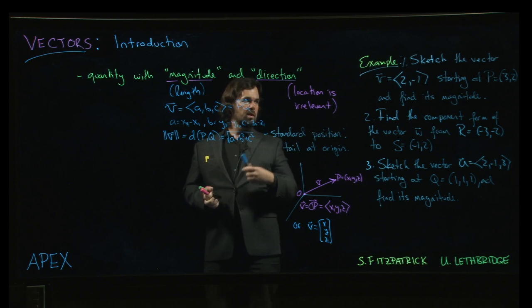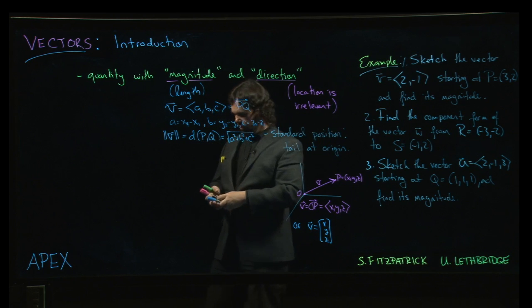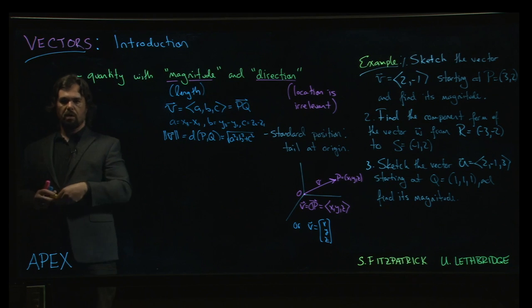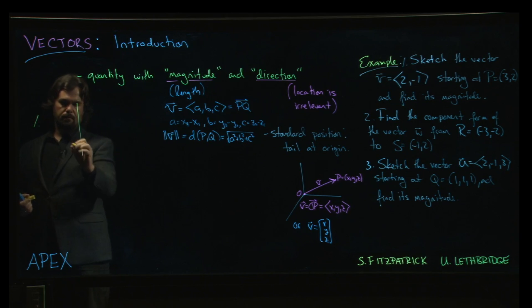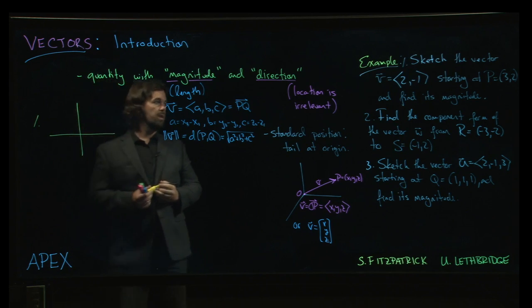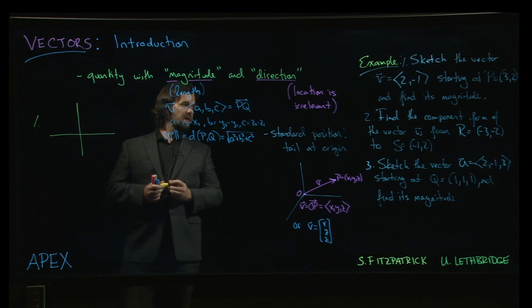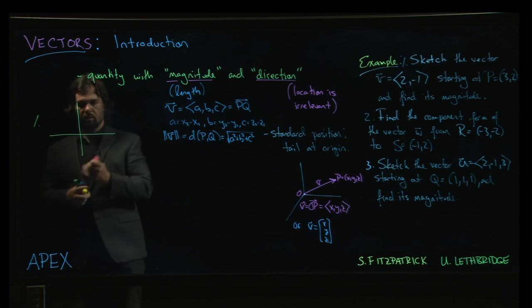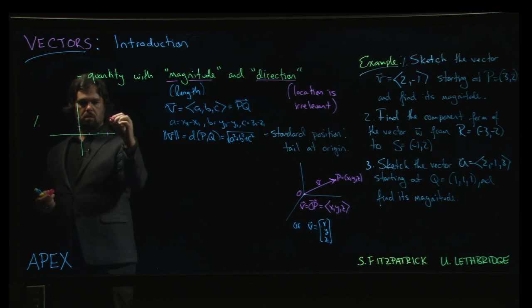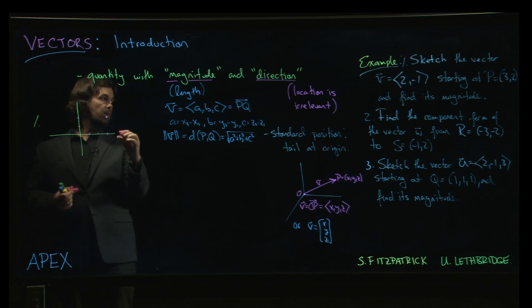So keep that in mind looking at this first example. So let's give ourselves a coordinate system. Let's do this over here. All right. So we draw our coordinate plane. And we're going to start at the point 3, 2. So let's plot that point. We go 1, 2, 3, up 1, 2. There's our point. What do we call it? P.